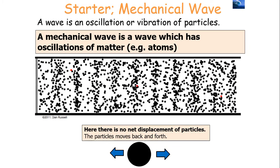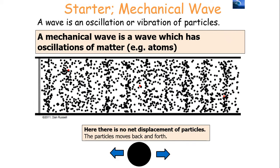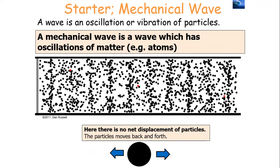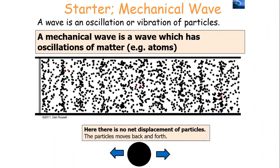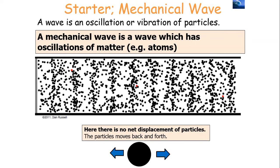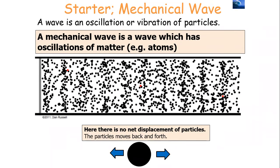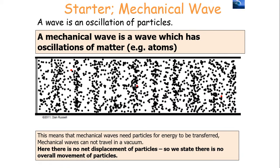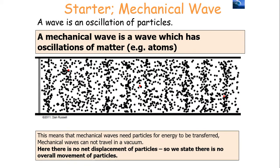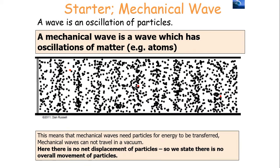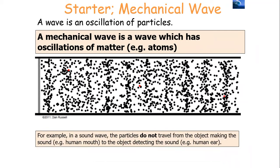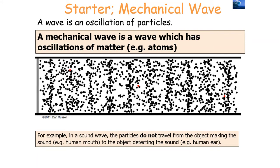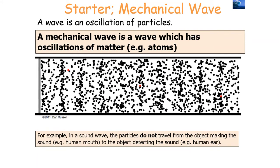A mechanical wave is a wave which is an oscillation of matter, for example atoms. There is no displacement of particles — the particles move backwards and forwards. The red dots in the animation highlight two particles; if you focus on them, you'll notice the particles are oscillating backwards and forwards as the wave transfers through. So whilst it might look at first glance that the particles are travelling from one side to the other, that is not the case. In a mechanical wave, you need particles for energy to be transferred, so they can't work in a vacuum. There's no net displacement of particles.